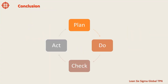In conclusion, the PDCA cycle is a powerful framework for continuous improvement. By following the four steps of Plan, Do, Check, and Act, you can identify and address problems and opportunities more effectively, promote collaboration and communication, and make data-driven decisions.